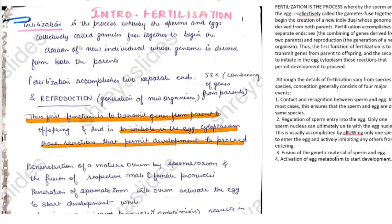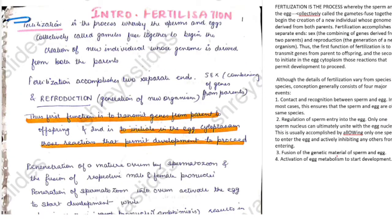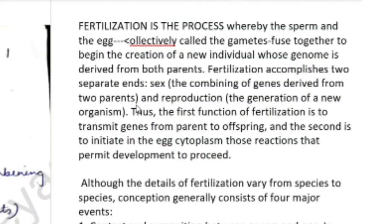Fertilization is a process whereby sperm and eggs, collectively called gametes, fuse together to begin the creation of new individuals whose genomes are derived from both parents. Fertilization accomplishes two separate ends: first, the combining of genes derived from two parents; and second, the initiation of reactions in the egg cytoplasm that permit development to proceed.